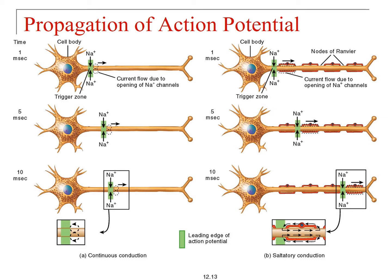Looking at the bottom left where continuous conduction is shown, those little circles with arrows indicate the flow of sodium in and out. You've got a current flow that the opening of sodium channels is responsible for. The area where sodium is coming in is just ahead of where the membrane is moving towards threshold. Just behind that area, you have a portion of the axon undergoing the refractory period. At five milliseconds, the action potential has moved a little ways down the axon — one area is moving towards threshold, another is letting sodium ions in, and the next area is in a refractory period.